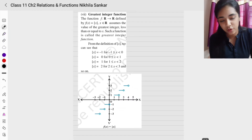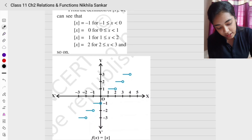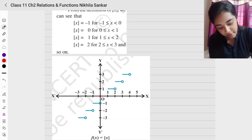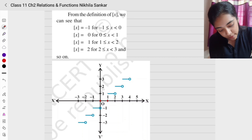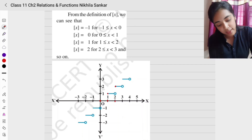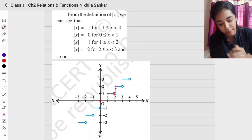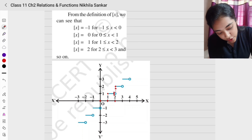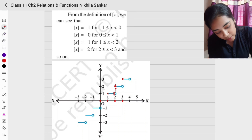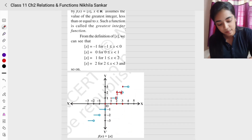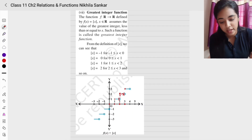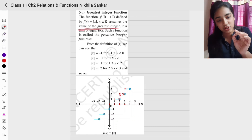The greatest integer function: f(x) takes the value of the greatest integer less than or equal to x. When x = 0, f(x) = 0; x = 1, f(x) = 1; x = 2, f(x) = 2. For values between 1 and 2, such as 1.99999, f(x) remains 1 until x reaches 2. This creates a step graph — the function jumps at each integer. Values between 2 and 3 all give f(x) = 2, and at x = 3 it jumps to 3.